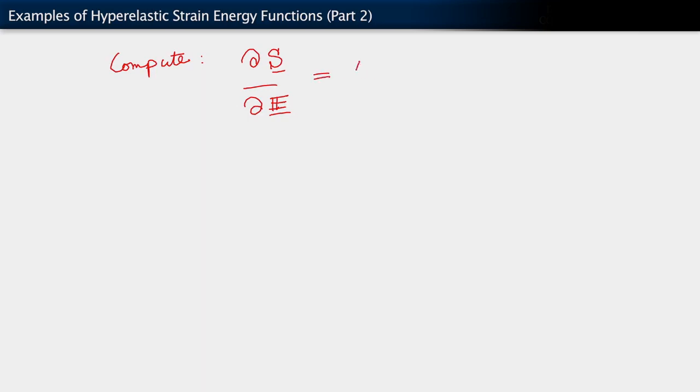So in this case, we would get lambda one tensor one. I'll write it in direct notation and also in coordinate notation, plus two mu multiplying another tensor which I'm going to just write as i, and I'll say more about it.